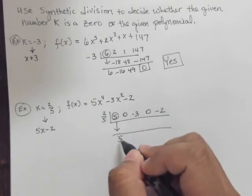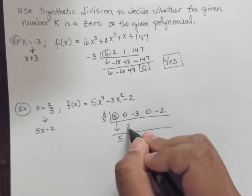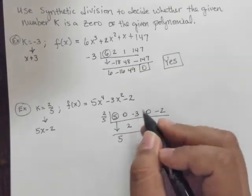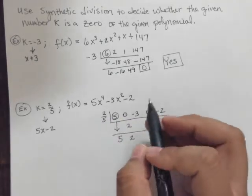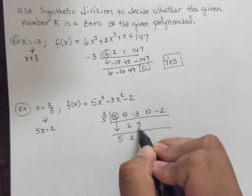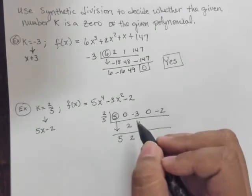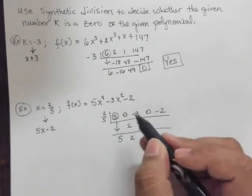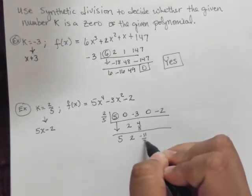So I've got 5, and I'm going to multiply it by 2 fifths, and that gives me 2. And 0 plus 2 is 2. Now I've got 2 times 2 fifths, and that's 4 fifths. Now the next part, the very simple arithmetic here, you can verify on your calculator or by hand. And we've got negative 3 plus 4 fifths, and we get negative 11 over 5.